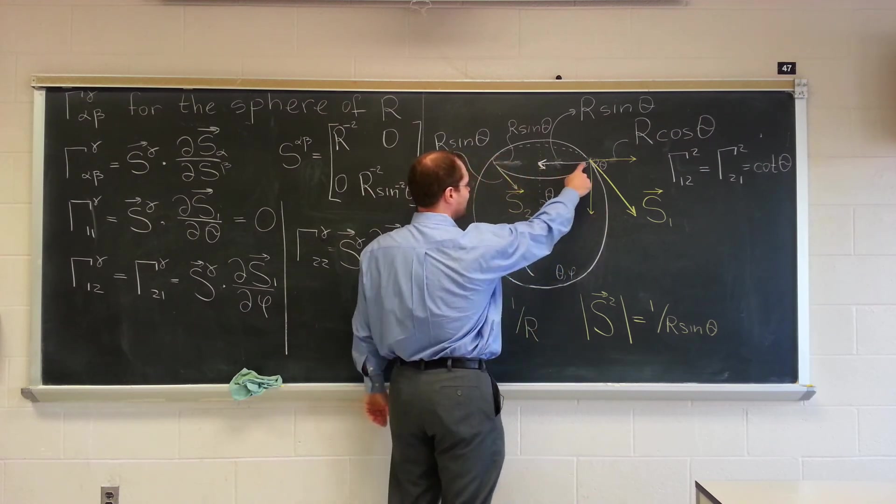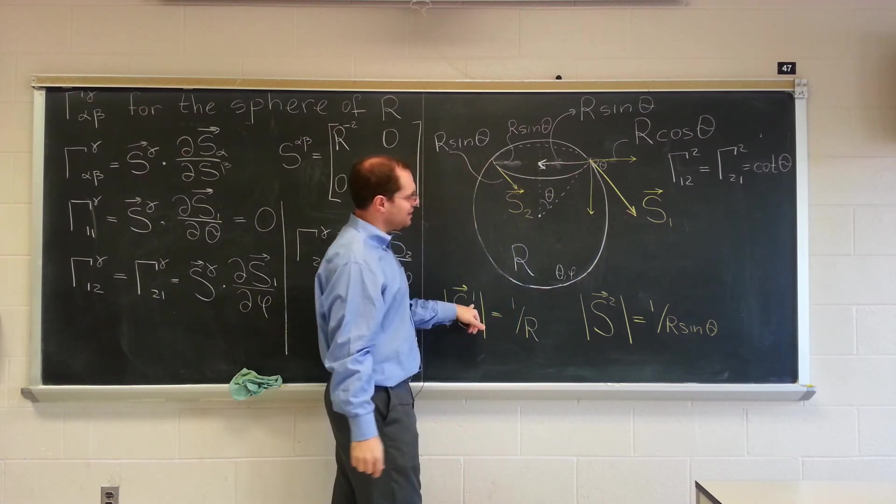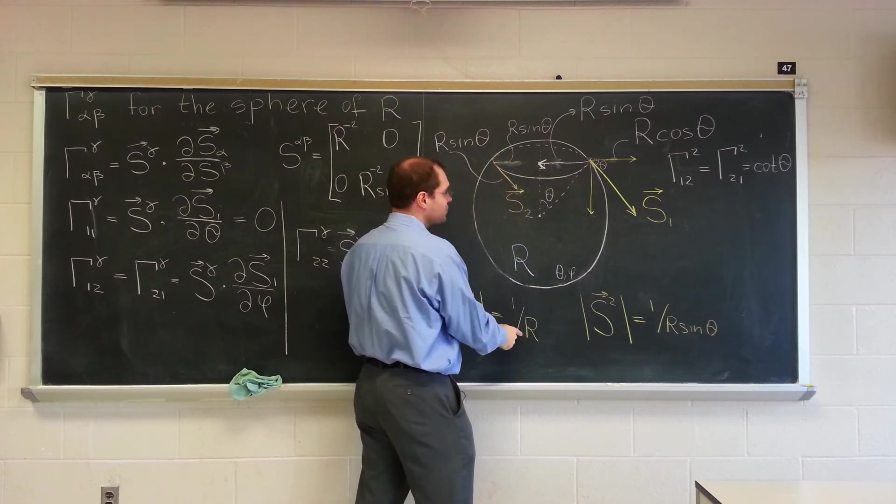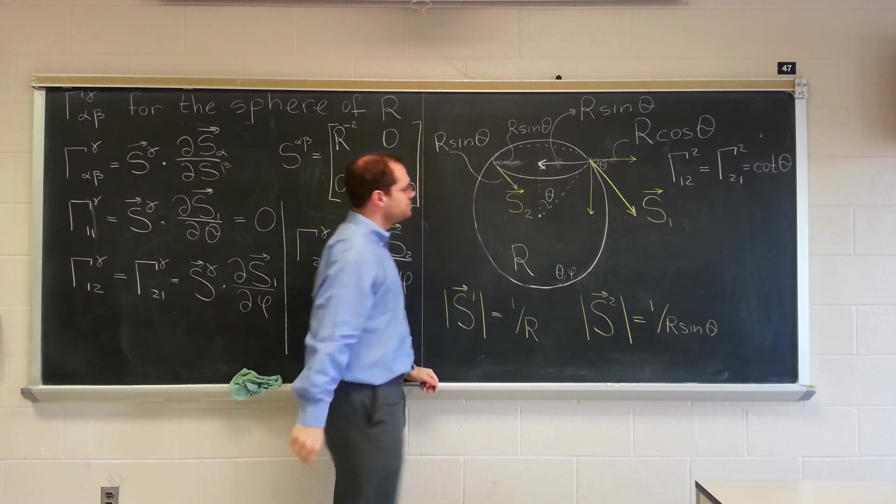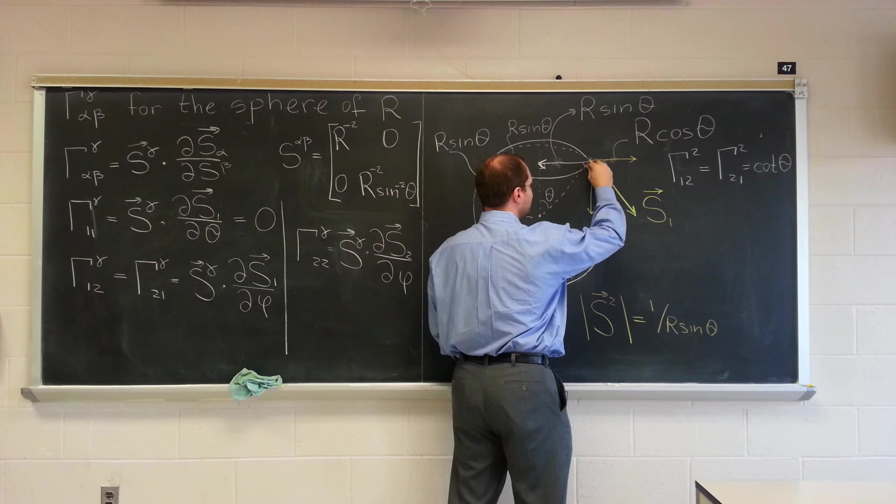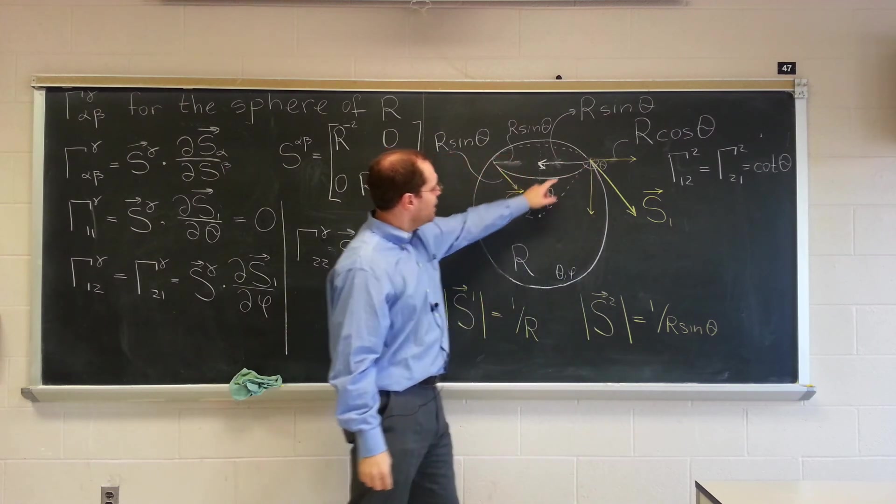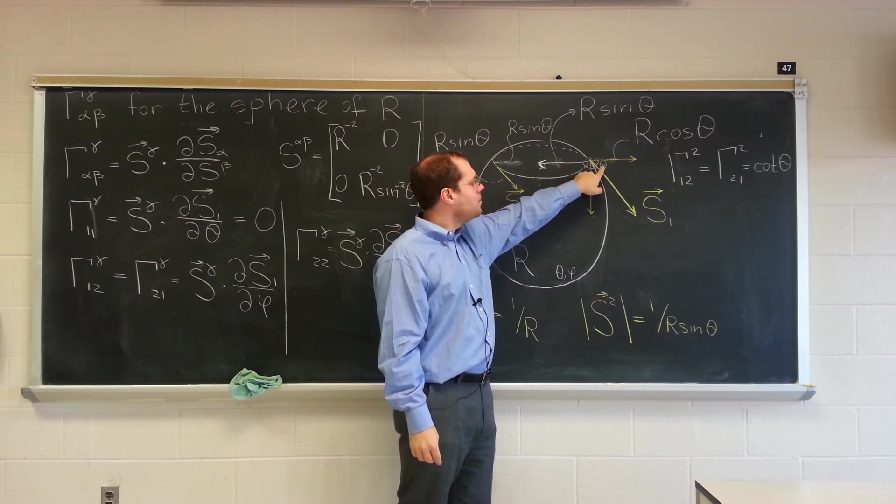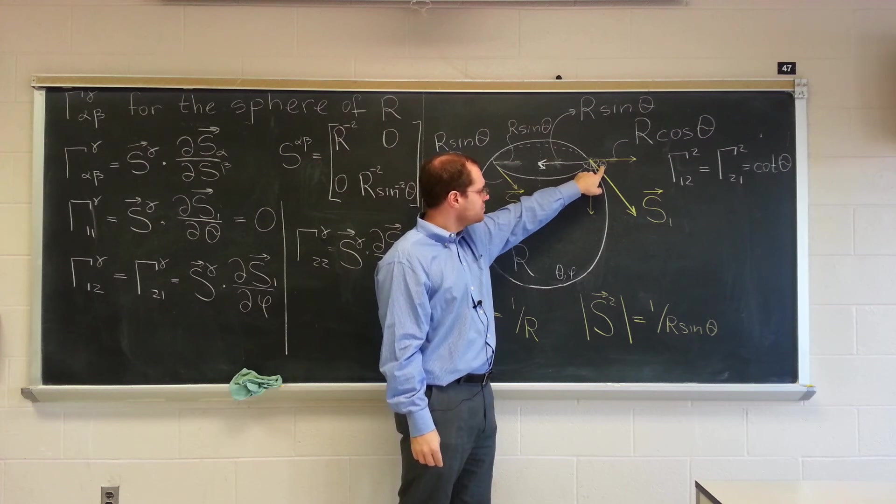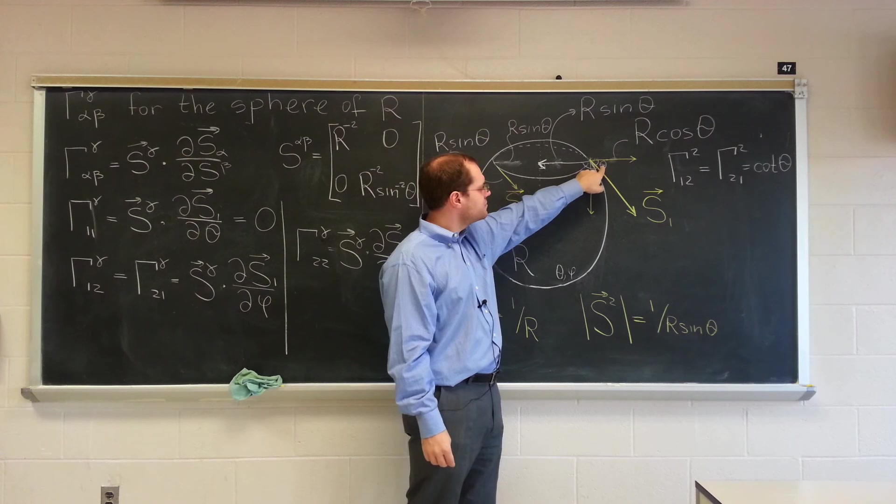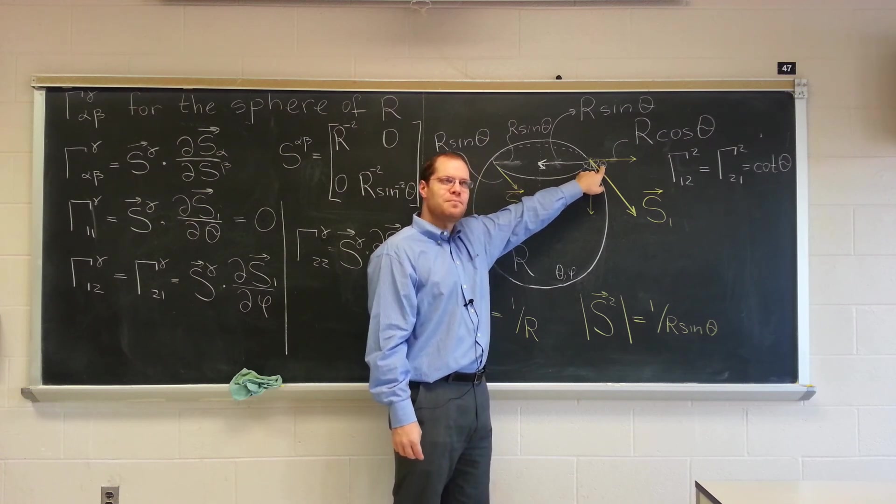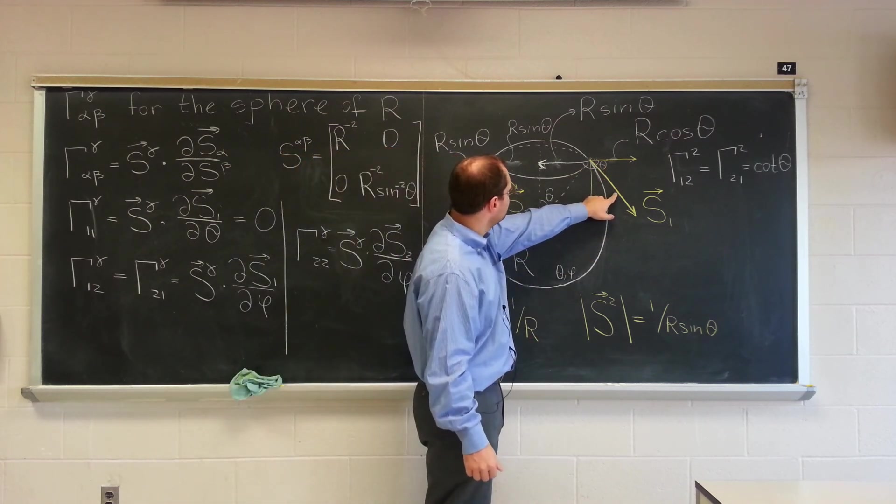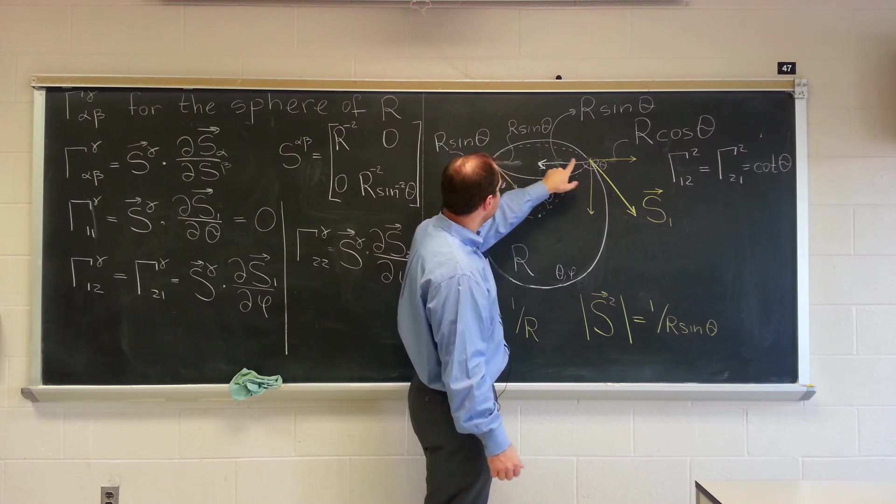Now we have to find the dot product of this vector and S with an upper index. It'll be the length of S1, which is 1 over R, times the length of this, times the cosine of the angle between them. The angle between them is pi minus theta. So the cosine of pi minus theta is minus cosine theta.